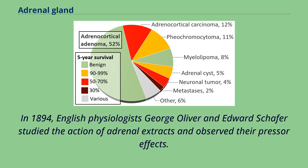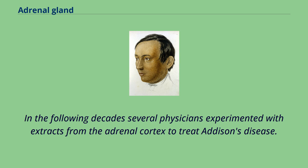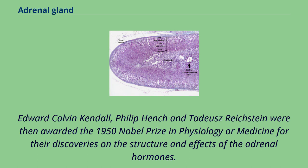In 1894, English physiologists George Oliver and Edward Schaefer studied the action of adrenal extracts and observed their pressor effects. In the following decades, several physicians experimented with extracts from the adrenal cortex to treat Addison's disease. Edward Calvin Kendall, Philip Hench, and Tadeus Reichstein were then awarded the 1950 Nobel Prize in Physiology or Medicine for their discoveries on the structure and effects of the adrenal hormones.